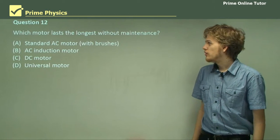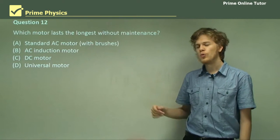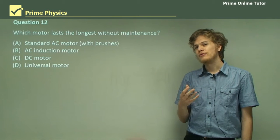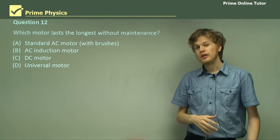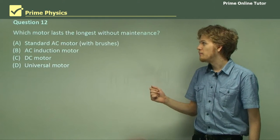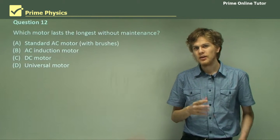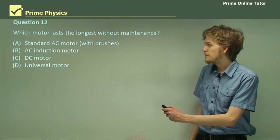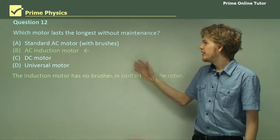Question 12. Which motor lasts the longest without maintenance? Is it the standard AC motor, the AC induction motor, the DC motor, or the universal motor? Now the lifetime of almost all of these motors is determined by the graphite brushes that are used to connect the commutator, or slip rings in the case of the standard AC motor, to the input power. And this means that all of these will have brushes that wear down over time. The single exception is the AC induction motor, which does not use brushes. So once again, that's our answer. The induction motor has no brushes in contact with the rotor, and so it will take much longer to wear down than the other motors.